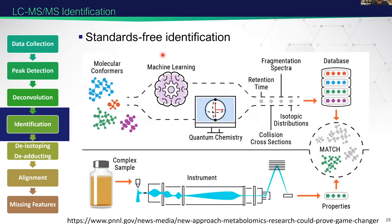Standards-free identification is still in its infancy, but generally uses machine learning and quantum chemistry to build up synthetic databases including retention times, fragmentation, and even collision cross sections. We can build a database and compare it to our real-world sample. This has huge potential, but it's still relatively young, and it's something that PNNL is actively investing in.